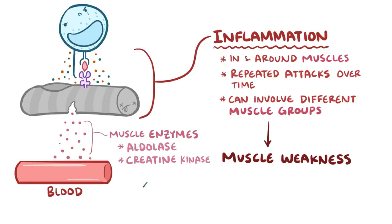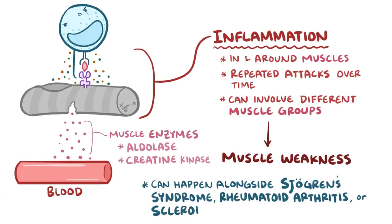Because it's an autoimmune process, it's also possible for polymyositis to happen alongside other autoimmune connective tissue diseases, including Sjogren's syndrome, rheumatoid arthritis, or scleroderma.